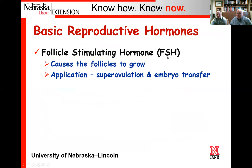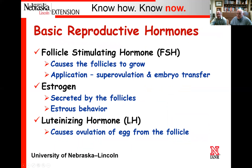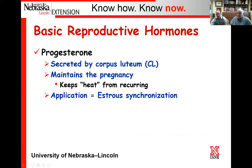The hormones we have listed here are ones we feel are important. Follicle stimulating hormone, or FSH, causes the follicle to grow. Estrogen is secreted by the follicles and provides estrus behavior — that's what brings an animal into estrus. Luteinizing hormone causes ovulation. Progesterone is secreted by the corpus luteum or CL; it helps maintain pregnancy and tells the cow that she is pregnant, keeping her from coming back into heat. Progesterone is also important when we talk about estrus synchronization.